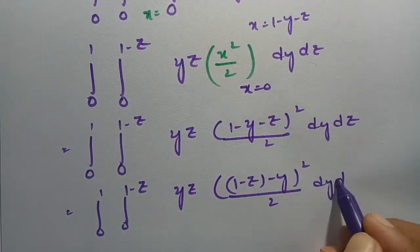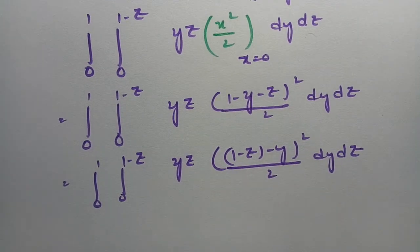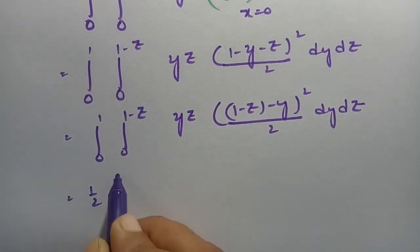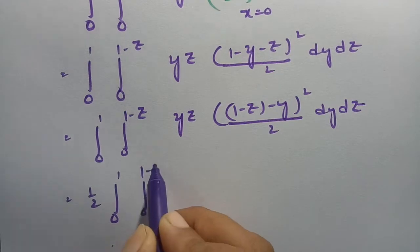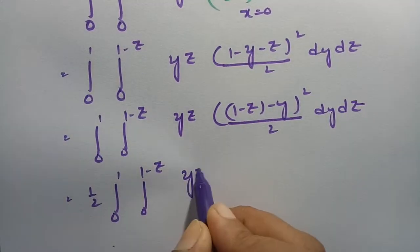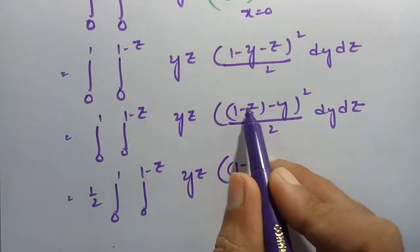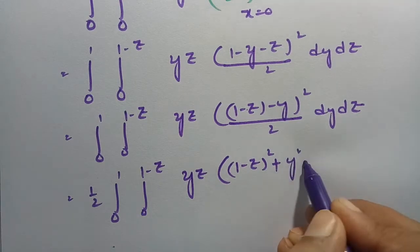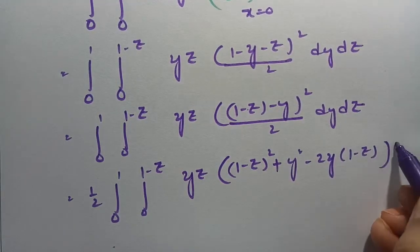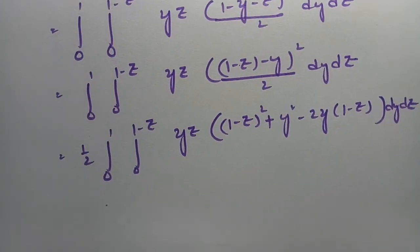Sending the half outside, this will be one-half times integral 0 to 1, integral 0 to 1 minus z. If I expand (1 minus z minus y) squared in the form of (a minus b) squared, this is a squared plus b squared minus 2ab, so we get yz times that expansion, dy dz.